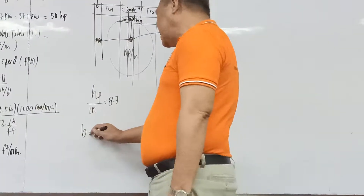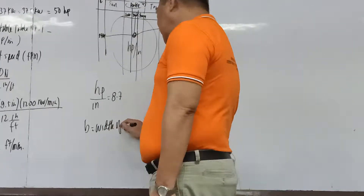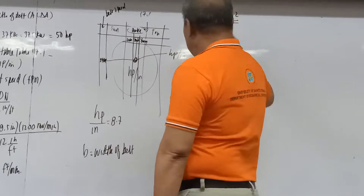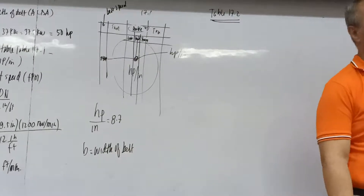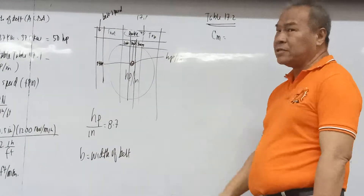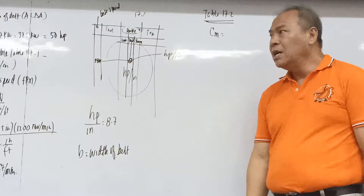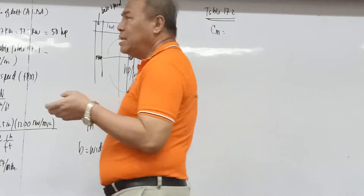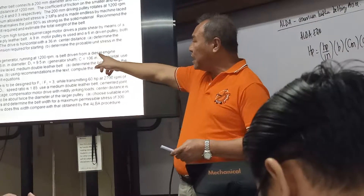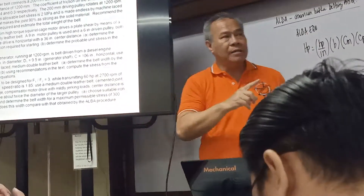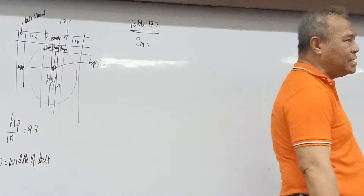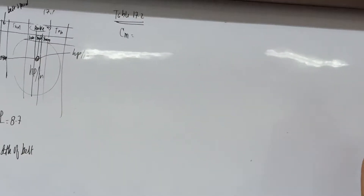C_M (operating condition factor) depends on the belt's operating condition — whether it's a jerky load, oil and dust, or other conditions. Looking back at the problem, only 'horizontal' is mentioned. When no specific operating condition is given, we assume C_F equals 1.0.